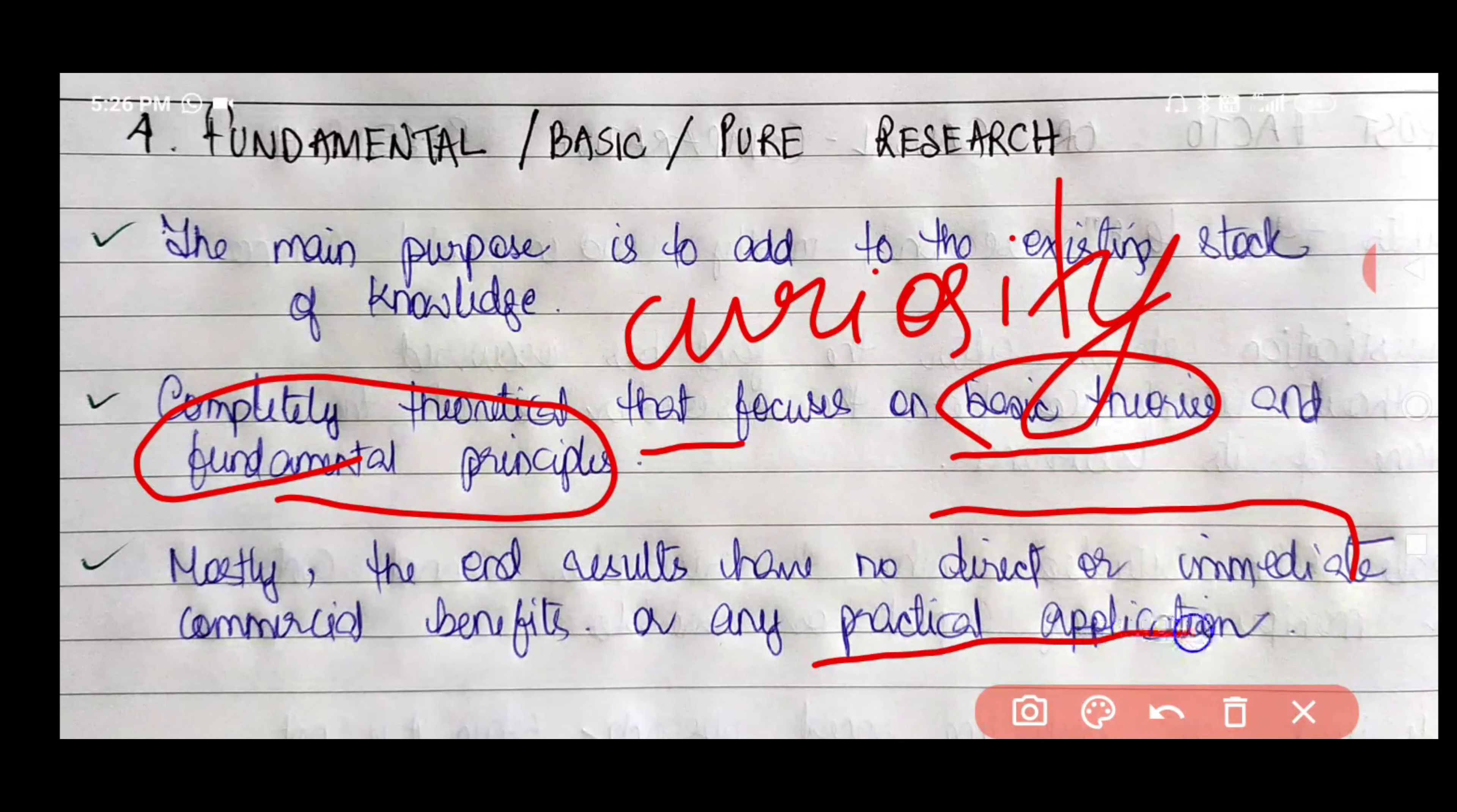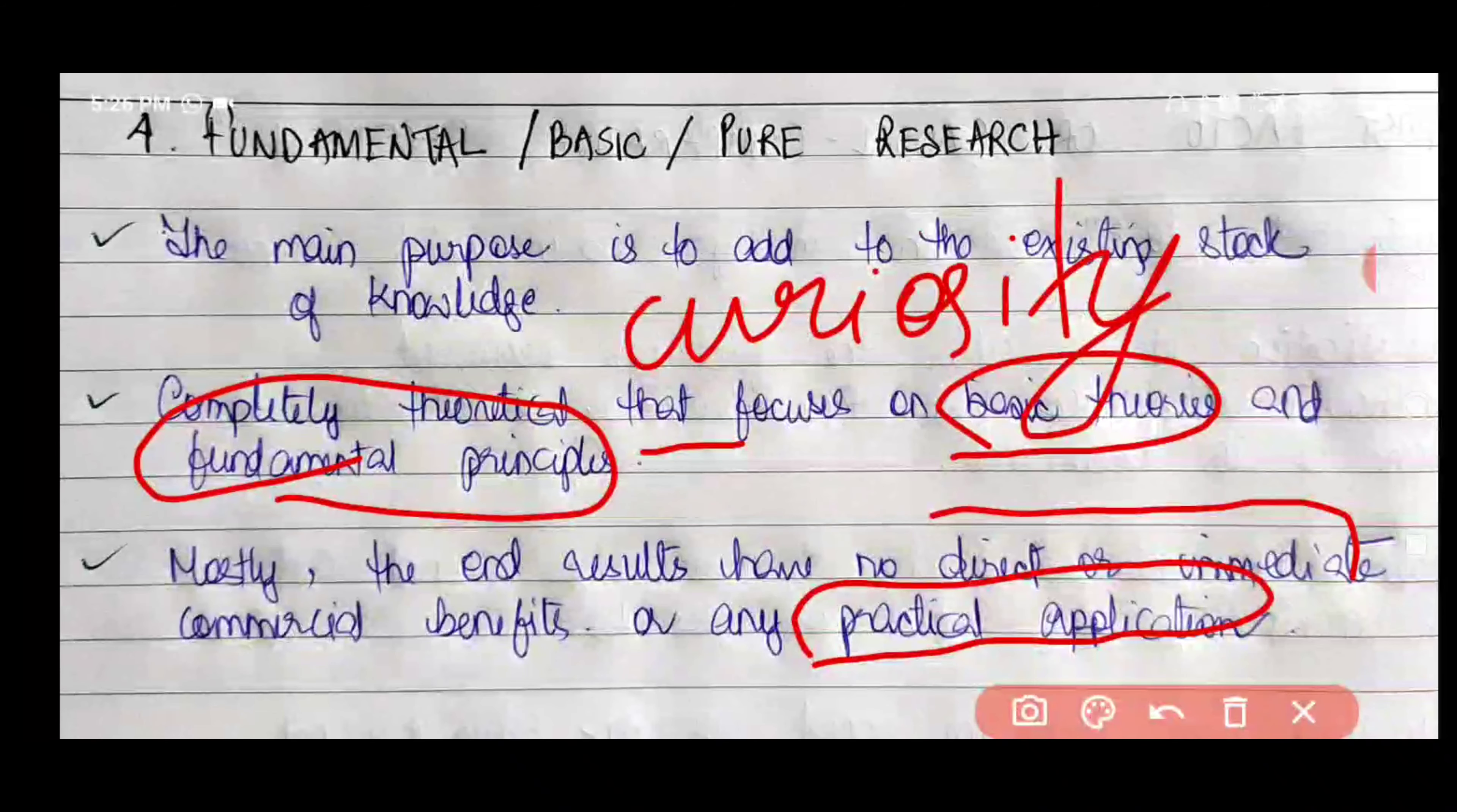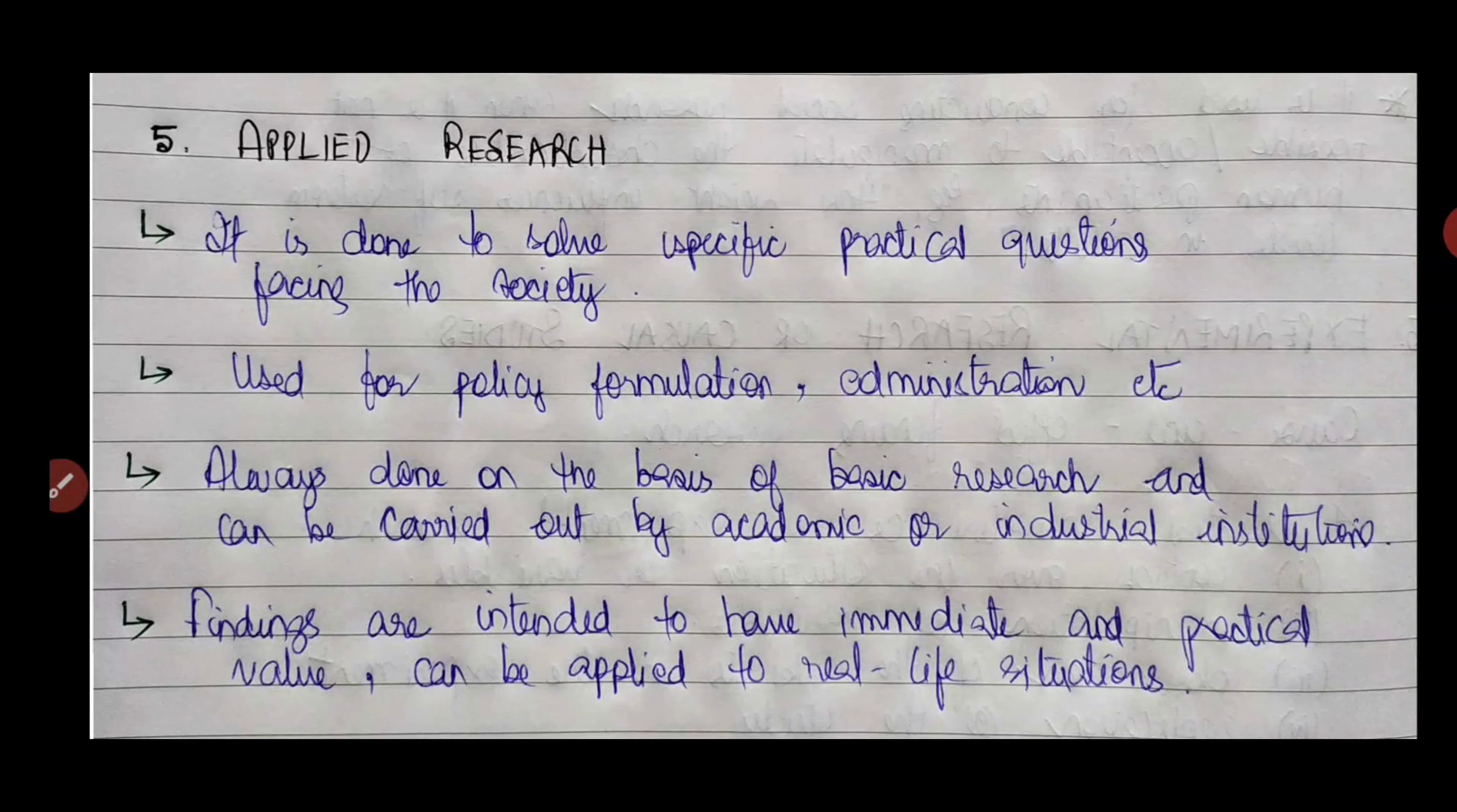An example of pure research can be Einstein's theory of relativity or Newton's law of motion or even Pythagoras theorem. Those are some examples of pure research. Applied research is quite the opposite of basic research.